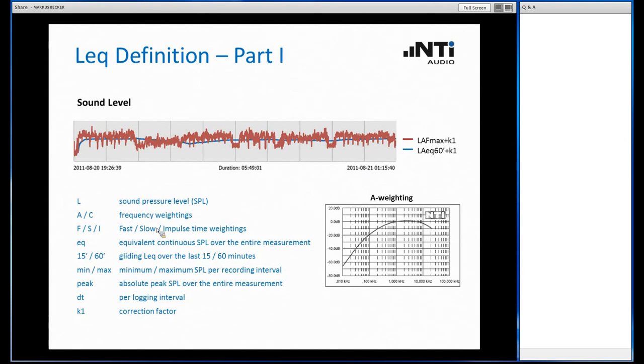Then we have an F, S or I behind the A or C. F, S or I stands for Fast, Slow or Impulse. These are time weightings. The difference from time weighting to frequency weighting is that with time weighting we just look at the sound events that have just occurred at the time when we were measuring or just a few milliseconds or seconds before. The events that happened longer ago are less relevant for the measurement result. The events that have just occurred during the measurement or before are the ones weighted with the highest amount. So this is a time weighting F, S or I.